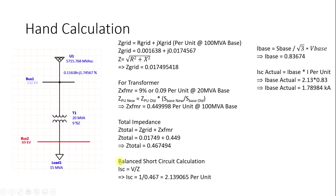To calculate the balanced short circuit current: I_sc = V/Z in per unit. Assuming the pre-fault voltage is 1.0 pu (69 kV = 1 pu), I_sc = 1.0 / 0.467 = 2.13 pu.